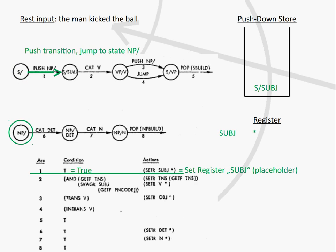The only thing we can do now is take this transition. This transition does not lead directly into the next state; instead, we are storing the name of this state in the pushdown store to remember it, and then we jump into the NP state. In the transition table, the condition for this transition is true, so we can always use it. The actions say that we want to set a value in the register — a subject with a placeholder.